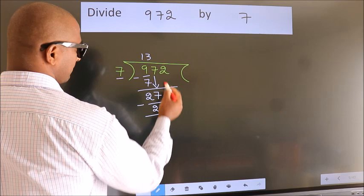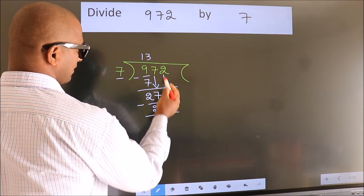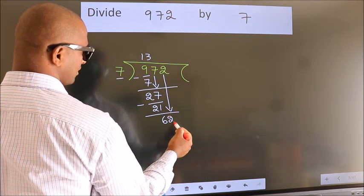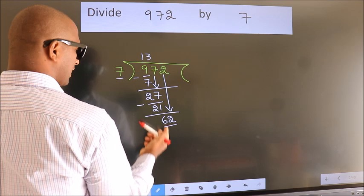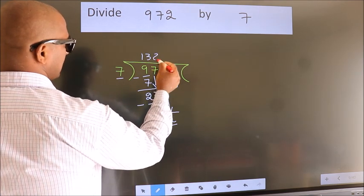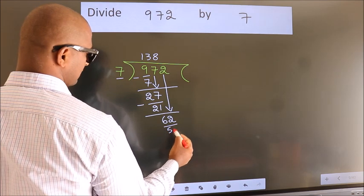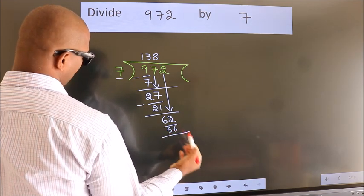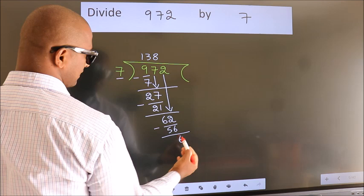After this bring down the beside number. So 2 down. So 62. A number close to 62 in 7 table is 7 eights 56. Now we subtract. We get 6.